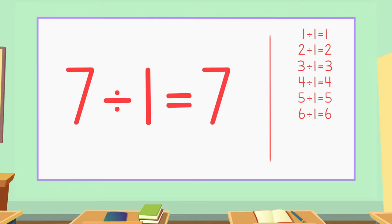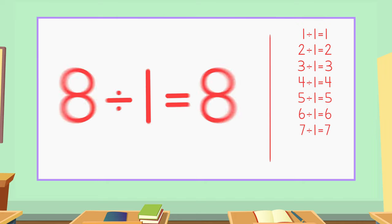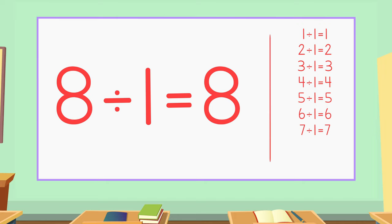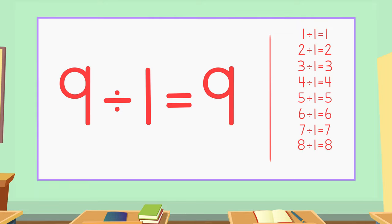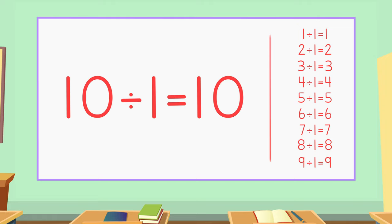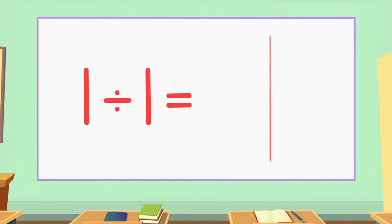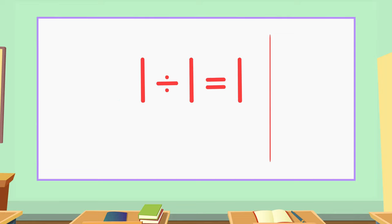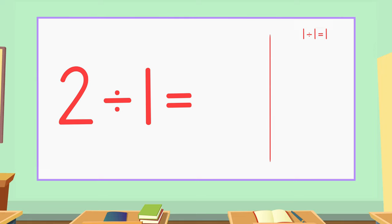7 divided by 1 equals 7. 8 divided by 1 equals 8. 9 divided by 1 equals 9. 10 divided by 1 equals 10.